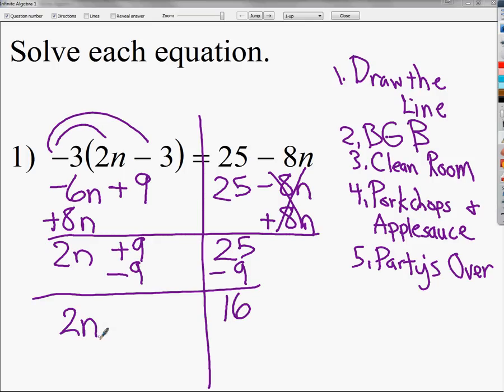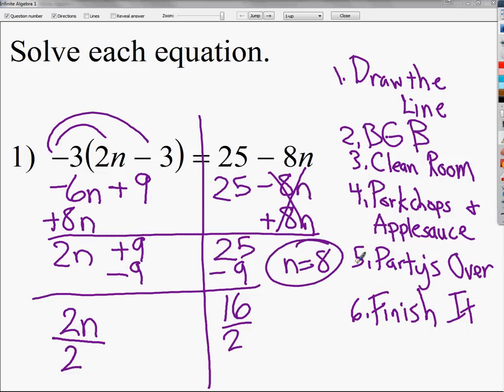25 minus 9 is 16. I've got 2n there. Now I'm at the finish it stage, which is the last stage. Usually the finish it stage focuses on a single final step. It's usually the opposite operation scenario. I've got 2 times n. In order to eliminate 2 times, I need to divide by 2. And 16 divided by 2 is just 8. So the answer to this question is 8.